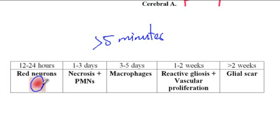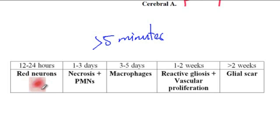Here you can see the neuron with the nucleus at the center, and it has a red color. The reason that the neuron becomes red is that as the neurons die, they lose organelles that are normally stained blue on hematoxylin and eosin staining. Now that these organelles are destroyed and no longer stained blue, what is left is only the red staining.